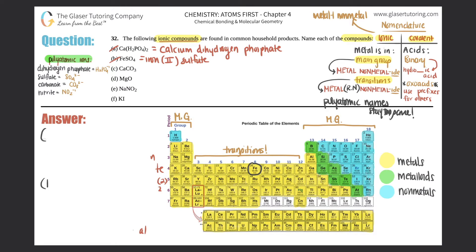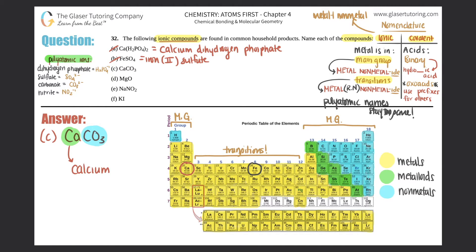Moving on to C: CaCO₃. Again we have calcium, which is a main group metal, so no Roman numeral — just state the metal: calcium. Then I have carbon and oxygen — three oxygens — which is definitely a polyatomic. Carbonate is CO₃, and the three is part of the polyatomic. No Roman numeral needed, so compound C is calcium carbonate.